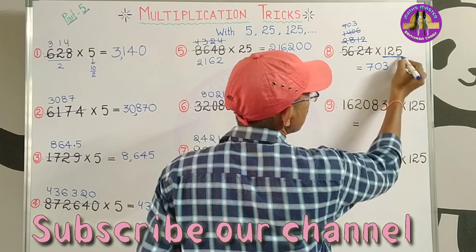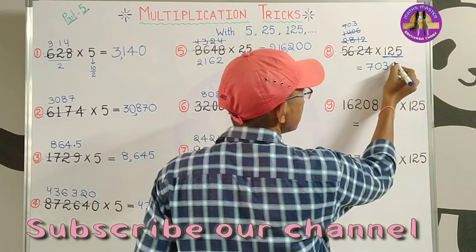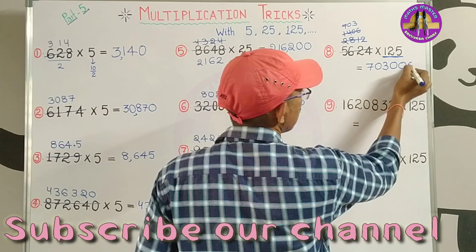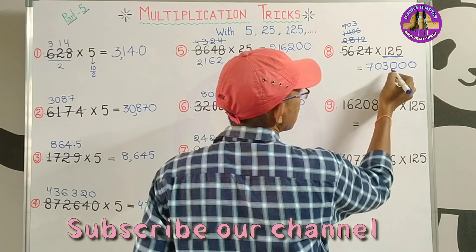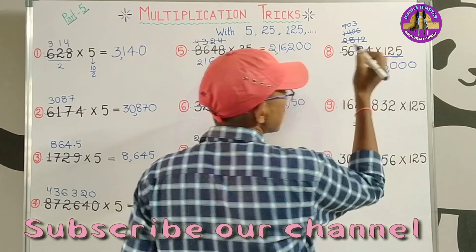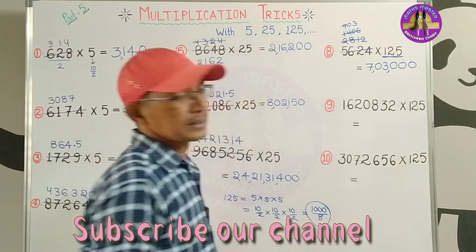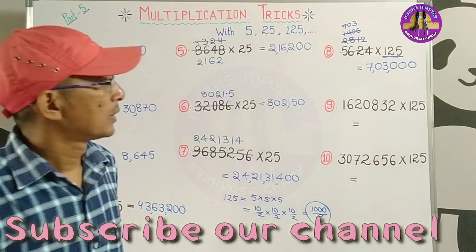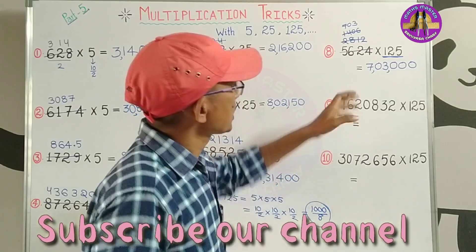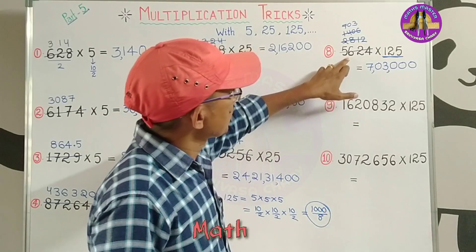So our answer becomes 7,3000. D-name 8th division.